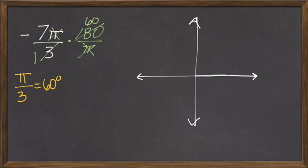So think about this. If every 1π over 3 is 60 degrees, and I have 7 of them, so 7 times 60 is actually going to be 420, but it's going to be negative 420.